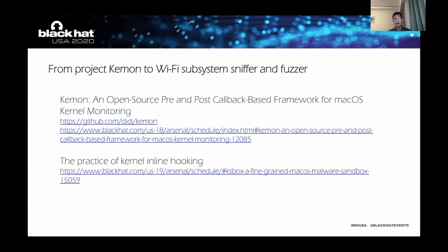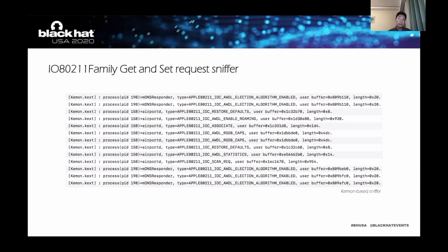Two years ago, I wrote a kernel extension called Kmon. In addition to monitoring features, Kmon has an NI Hook engine which can hook almost any kernel function you want. The source code can be found on GitHub. Last year, I practiced macOS IPC and XPC communication monitoring based on this project. Here is a link to Black Hat Arsenal 2019. In order to learn more about the attack surfaces of the Wi-Fi subsystem, I wrote several sniffers based on Kmon.